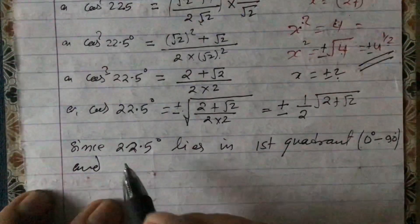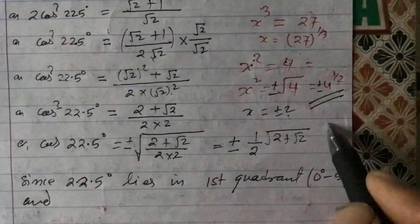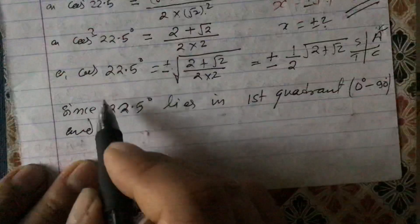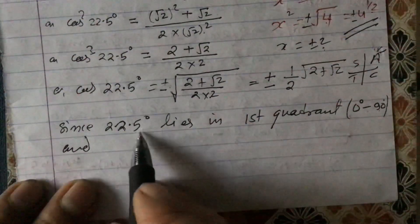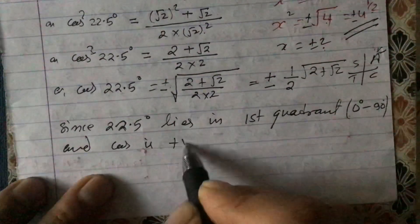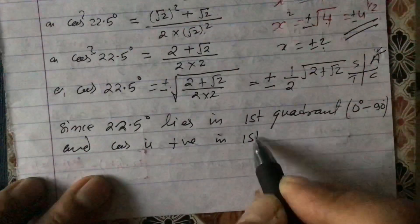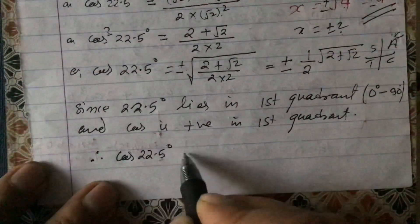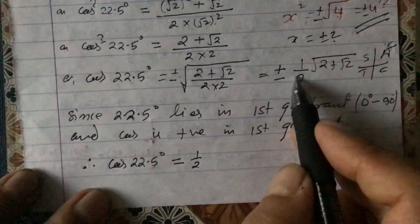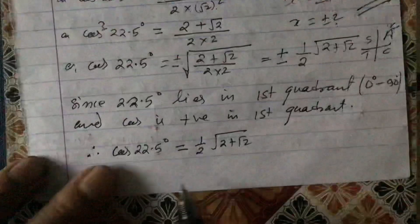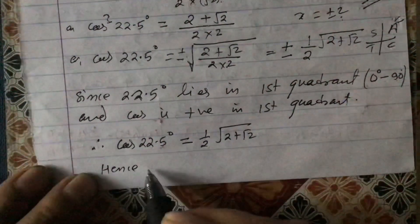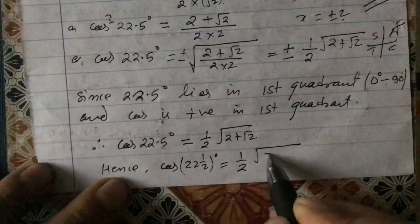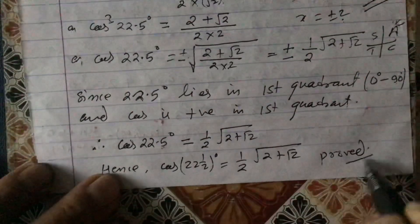Since 22.5° lies in the first quadrant and cos is positive in the first quadrant, we take the positive value only. Therefore, cos(22½°) = cos(22.5°) = (1/2)√(2 + √2). Hence proved. Thank you for watching this video.